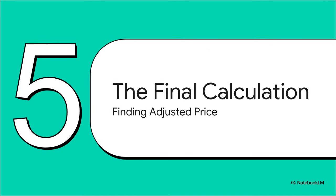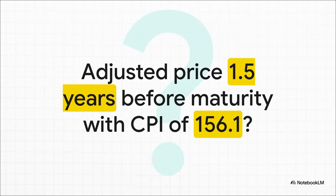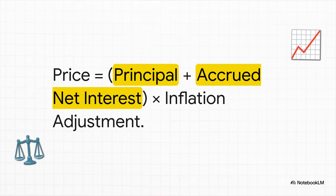For our final calculation, let's tackle a situation that happens all the time: pricing a bond based on accrued interest — the interest earned day by day but not yet paid out. If you're selling, you deserve to get paid for that. Here we are exactly a year and a half before the bond matures, which means we're perfectly in the middle of two coupon payments, so we have to account for that half year of interest already earned. The formula is intuitive: we start with the principal, add the net interest quietly building up for the last six months to get our total nominal value, then multiply by the index adjustment factor to get the true up-to-the-minute price.